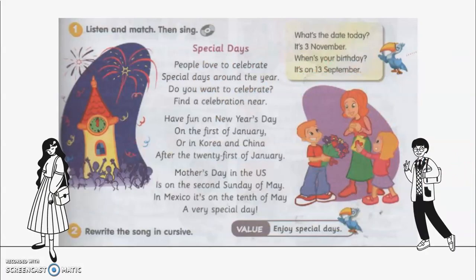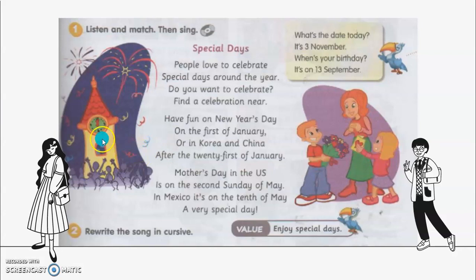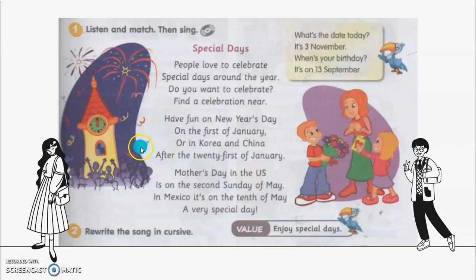Alright, so next we are going to sing a song. First, let's look at the pictures. There are two pictures. The first one on your left side — what picture is that? It is a picture of fireworks at midnight. How do you know it's midnight? Can you see the clock here? It shows twelve, so it is at midnight. And these are fireworks — bunga api. People are celebrating.